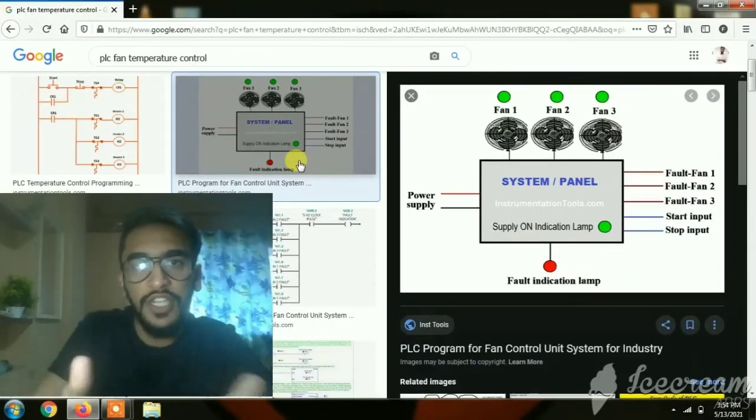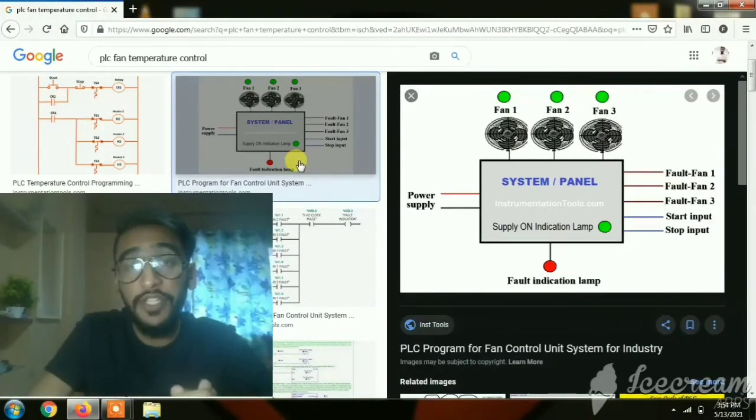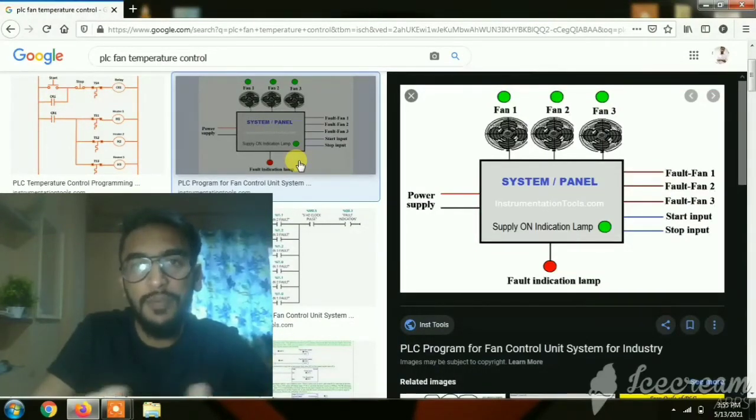As the temperature goes down, the PLC would detect that the temperature is decreasing. Now it's time to switch off the fan and open the relay circuit. This is one basic example where you can understand the working principle of a PLC.